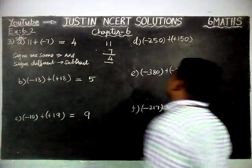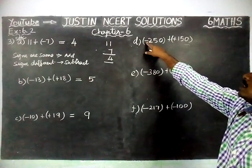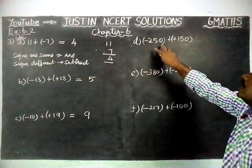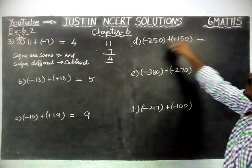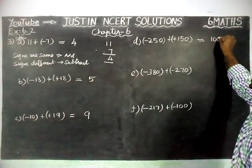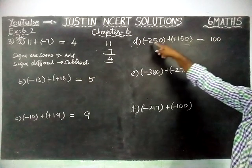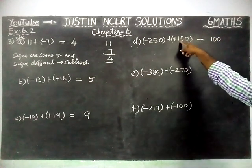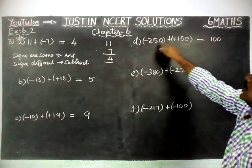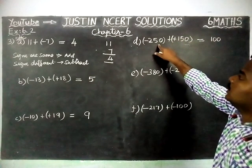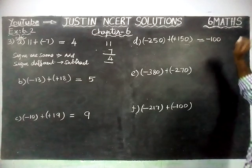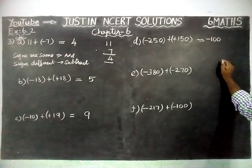Part D: the signs are different — minus and plus — so we have to find the difference. The difference between 250 and 150 is 100. The greatest number is 250, and in front of 250 there is a minus sign. So, minus 100 is the answer for part D.